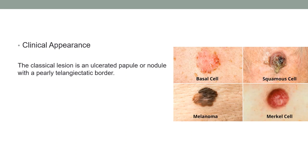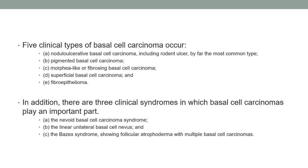Clinically, classical basal cell carcinoma presents as an ulcerated papule or nodule with a pearly telangiectatic border, often with rolled-out margins. Clinical subtypes include: nodulo-ulcerated (rodent ulcer), pigmented, morpheaform/fibrosing, superficial and fibroepithelioma. BCC is also part of three clinical syndromes: nevoid basal cell carcinoma syndrome, linear unilateral basal cell nevus, and Bazex syndrome — showing follicular atrophoderma with multiple basal cell carcinomas.